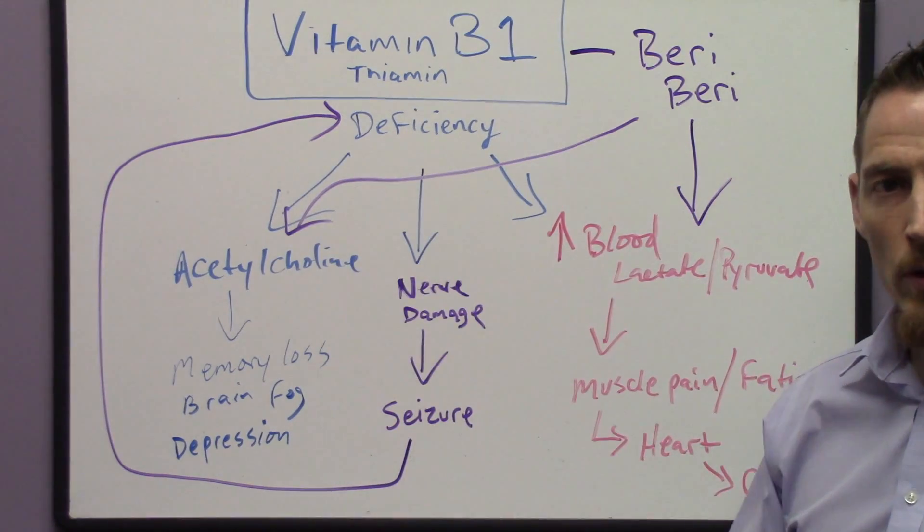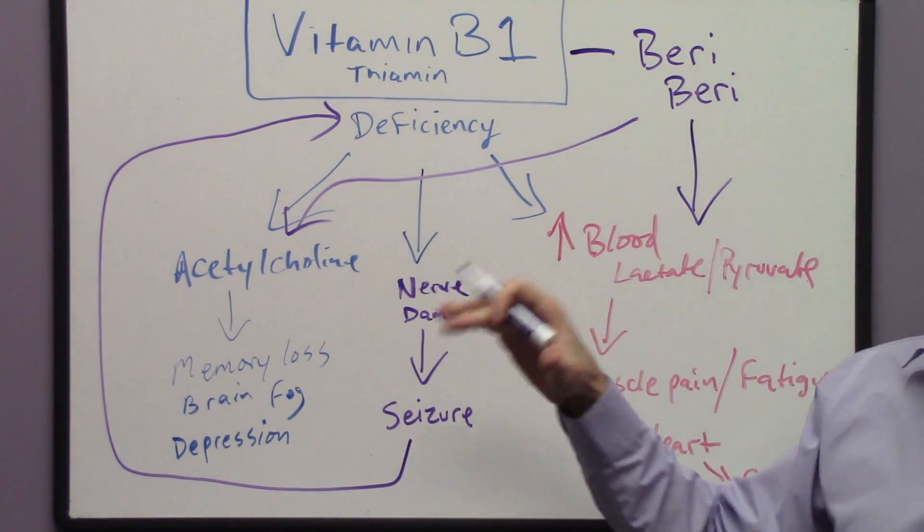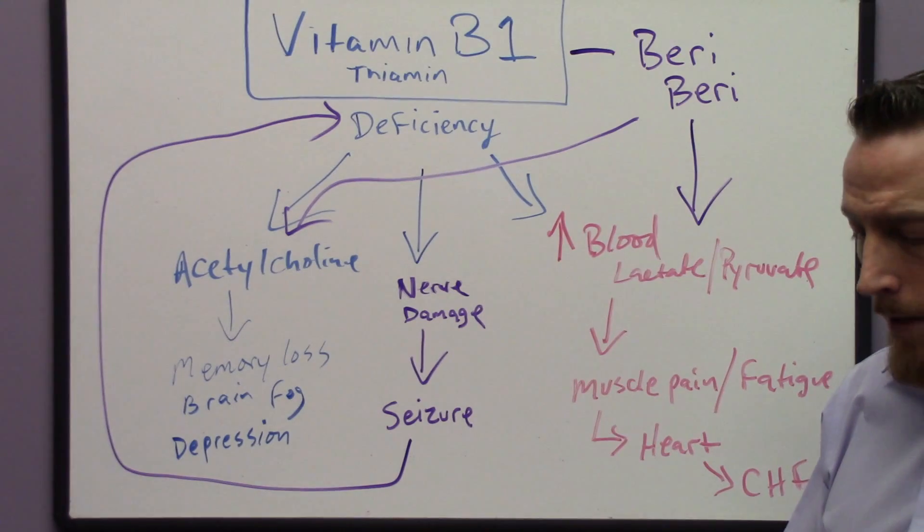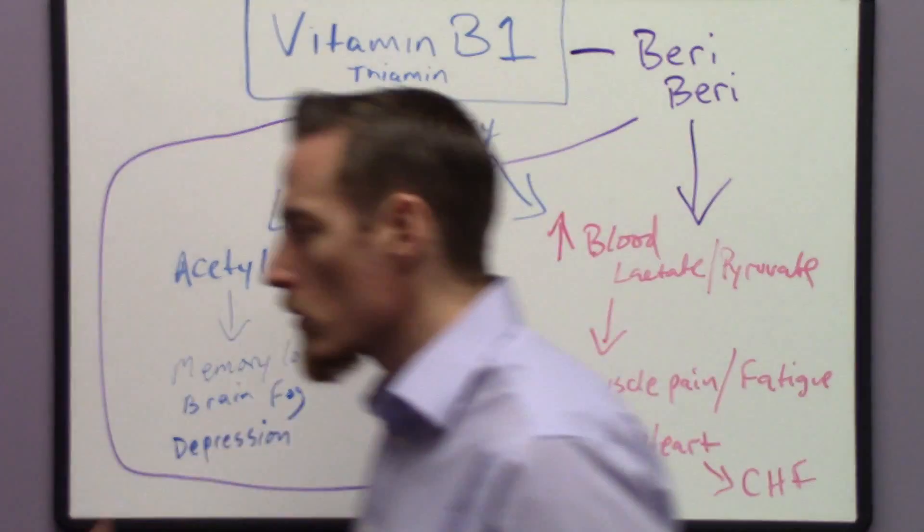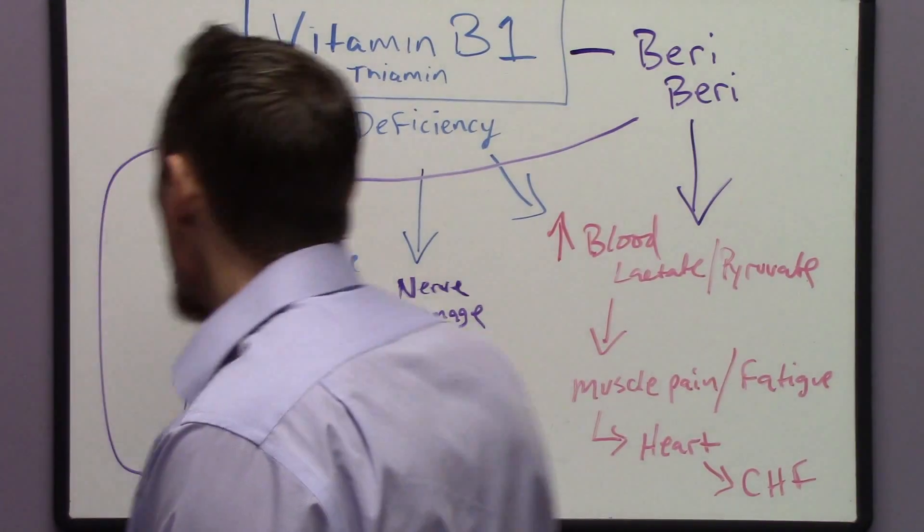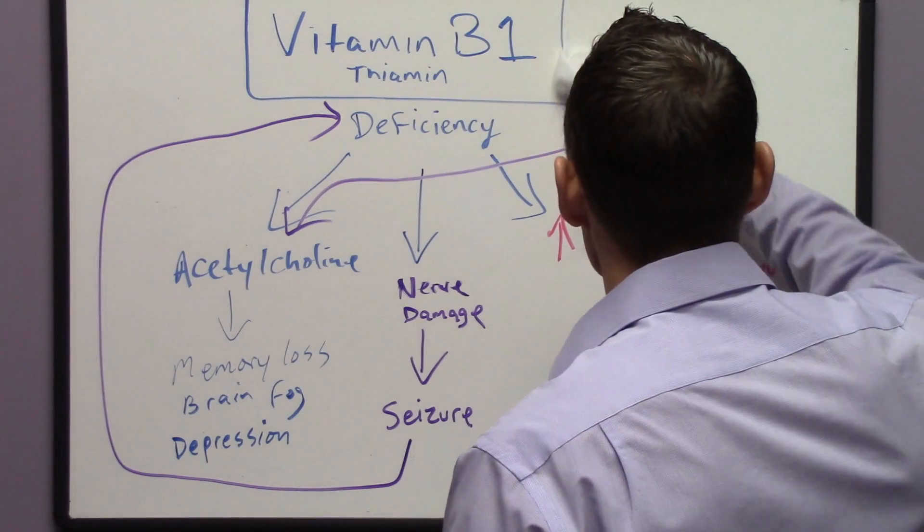So those are the two tissues. We have what's called wet and dry beriberi, depending on whether we're talking about heart or nervous tissue. And those are the main manifestations of vitamin B1 deficiency.